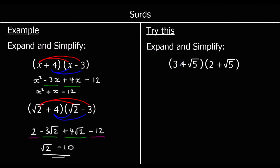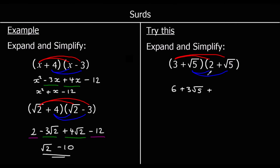So I'm going to do: I've got 3 plus root 5 times 2 plus root 5. So I'm going to multiply 3 by both the terms in the second bracket. I've got 3 times 2, which is 6. 3 times root 5, which I just write as 3 root 5. Then root 5 times 2 is 2 root 5. And root 5 times root 5 — when you square a surd, root 5 times root 5 is just 5.